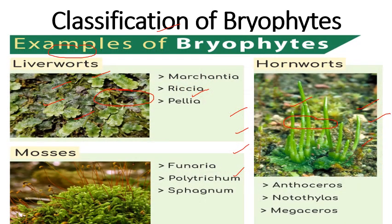Examples of bryophytes: liverworts include Marchantia, Riccia, Pellia, and Porella. Hornworts include Anthoceros, Notothylas, and Megaceros. Mosses are among the most advanced bryophytes.